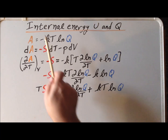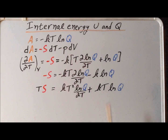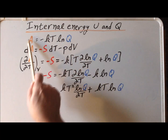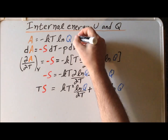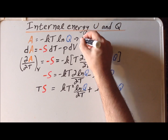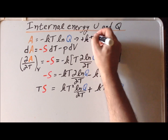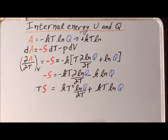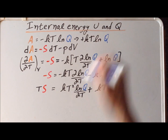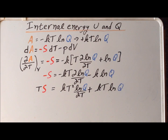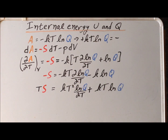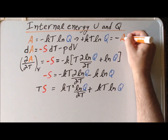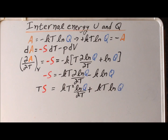Now one thing we notice is that this kT times the natural log of Q with a minus sign is equal to the Helmholtz free energy A. So that tells us that the positive kT times the natural log of Q is equal to the negative of the Helmholtz energy — this second term is now simply equal to minus A.